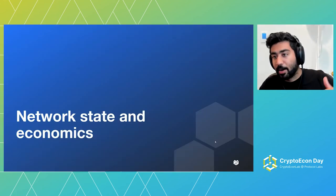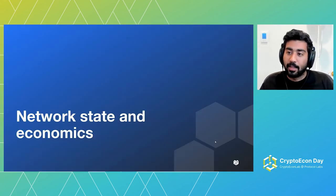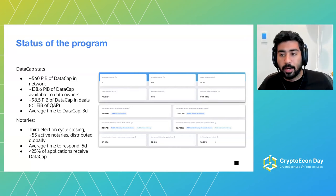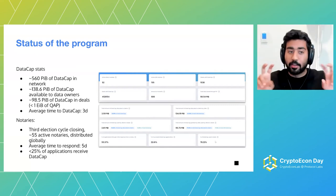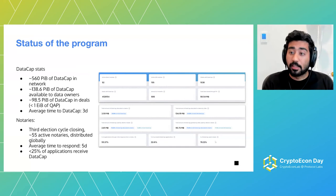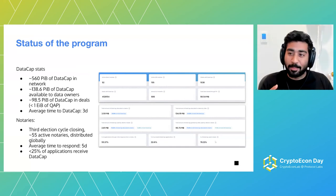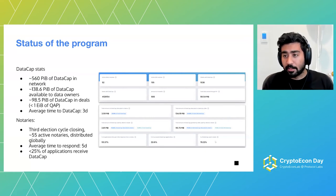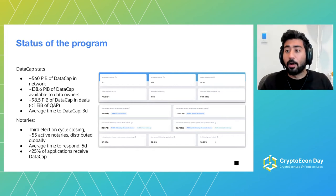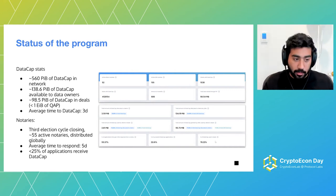Let's chat about what this means in terms of where Filecoin is at today. We've issued or allocated about 560 petabytes of DataCap in the network. About 140 petabytes of that has been made available in addresses owned by clients or data owners. And 98.5 petabytes — very close to hitting the major milestone of 100 petabytes — has actually been sealed into deals and sectors. That's just under one exabyte of quality adjusted power. It still represents a small percentage of the network, so we have a long way to go and an exciting opportunity to continue unlocking the usefulness of Filecoin.